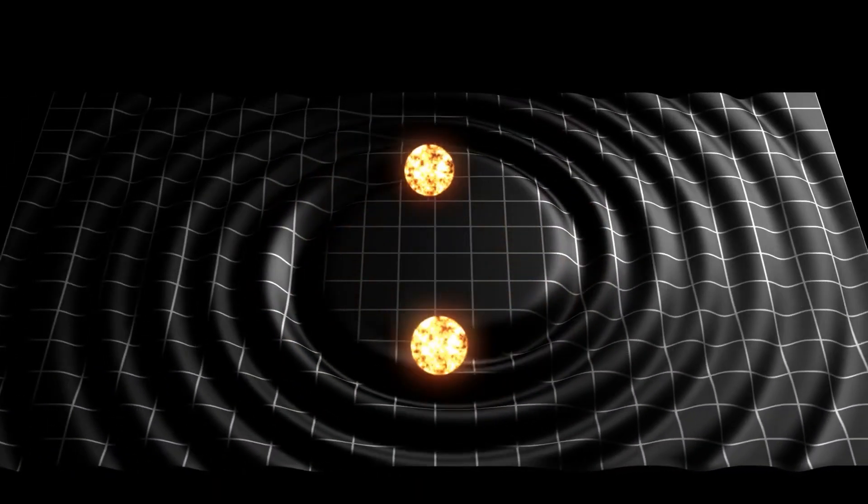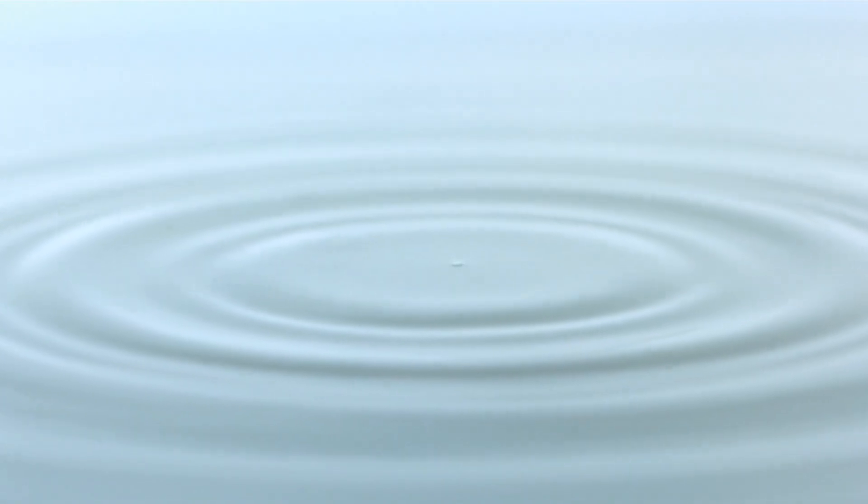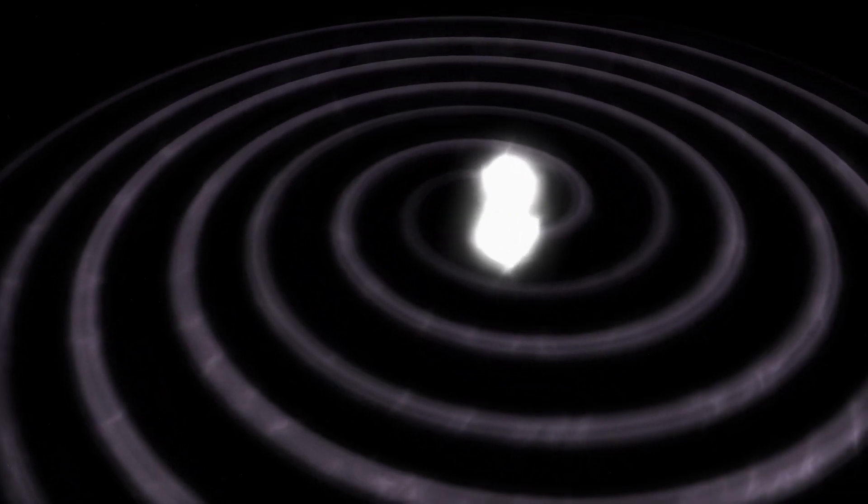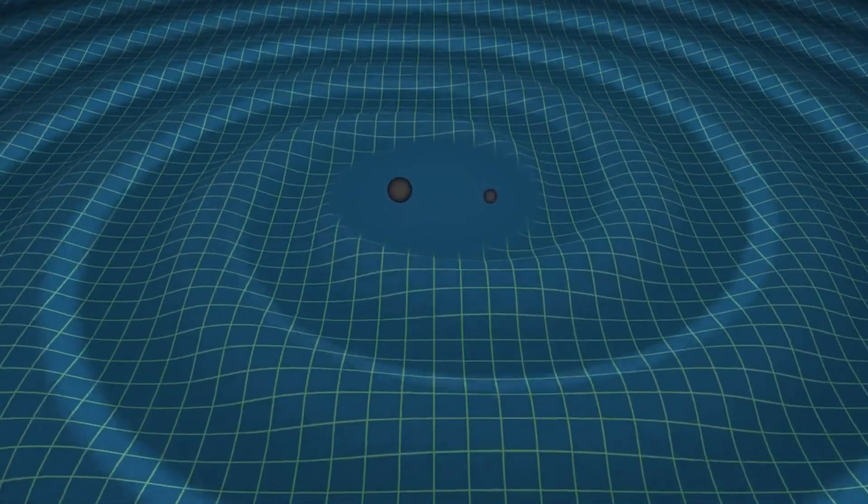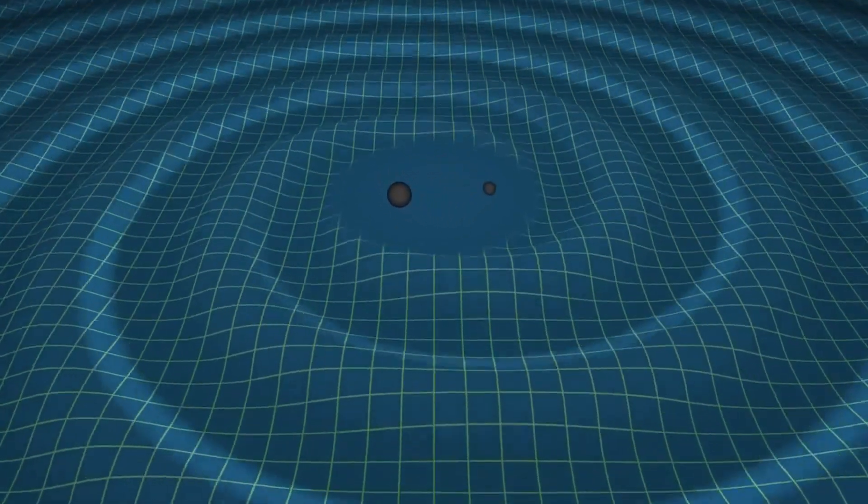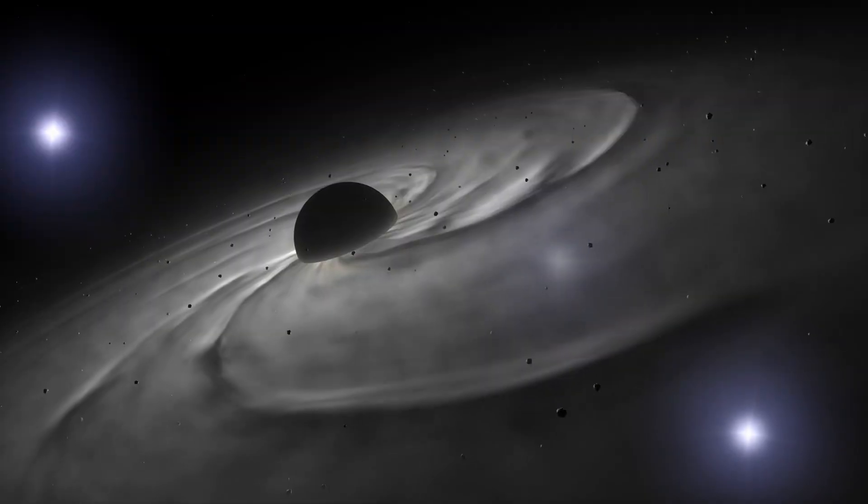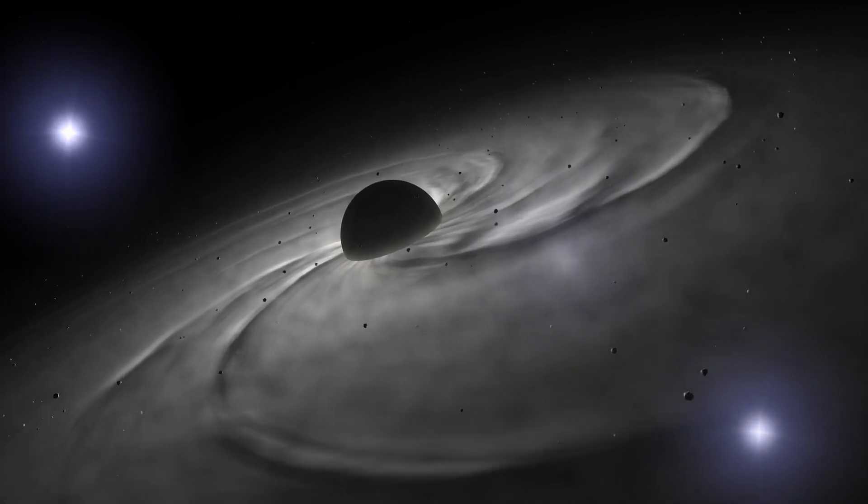Now think about this. Gravity travels as waves, much like ripples in a pond. These gravitational waves are disturbances in the fabric of space-time, caused by colossal events like black holes or neutron stars moving or colliding. These waves zip through space at the speed of light, carrying stories of these cosmic upheavals.